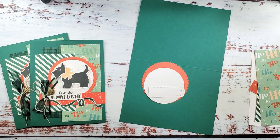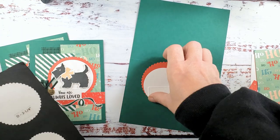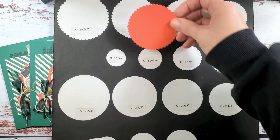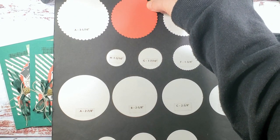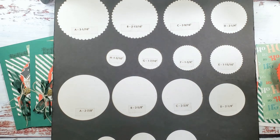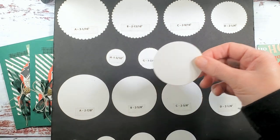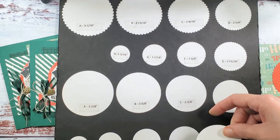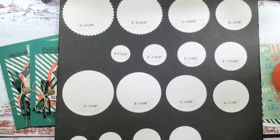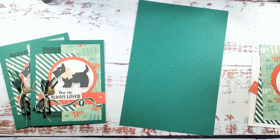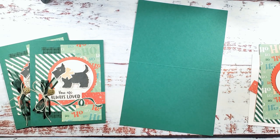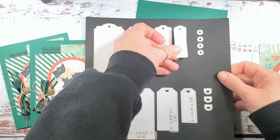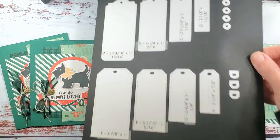Card base is shaded spruce and we went ahead and die cut for you some layering circles. The poppy parade scallop circle is the second to largest, two and thirteen sixteenths, and then we have a smooth circle, the third from the largest, about two and three eighths inch. That was basic white. Then we also cut for you from basic white this smallest little bracketed tag from the tailor-made tags dies.